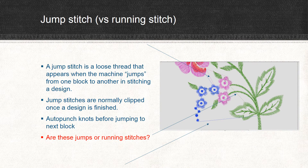A jump stitch, as opposed to a running stitch, is a loose thread that appears when your machine jumps from one block to another while stitching out a design. Jump stitches are normally clipped once you're finished, unless they're too close together to get your scissors in there. You don't have to worry about clipping them because Auto Punch knots your thread before jumping to the next block. Look at the picture — you can see threads between different spaces in the design. Sometimes what looks like a running stitch is actually a jump, so be careful — you don't want to clip out a whole row of stitches.